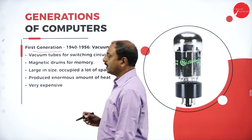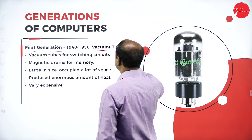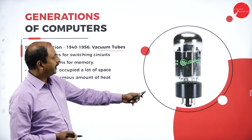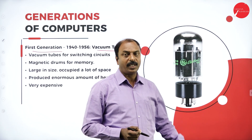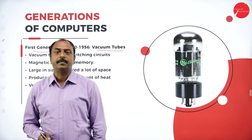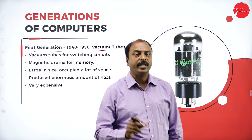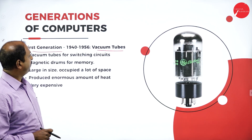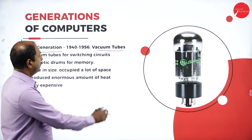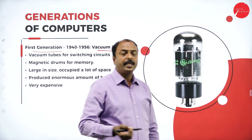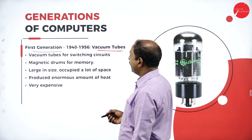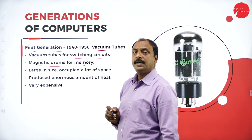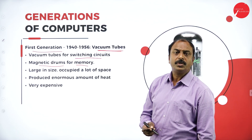What is the first generation of computers? First generation computers were using vacuum tubes as the main electronic components. We can see this is the picture of vacuum tubes — another name is electronic valve. These things we used to see in old radios, which were very big in size, and they were using electronic valves as the main electronic component. Vacuum tubes were used for switching circuits, and they were using magnetic drums for memory to store data and information.